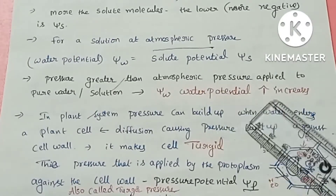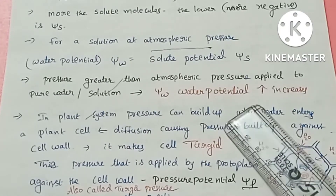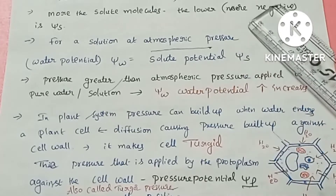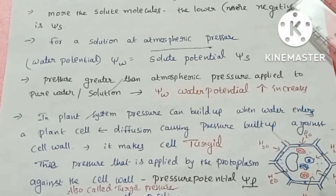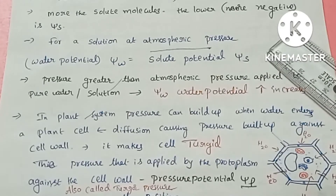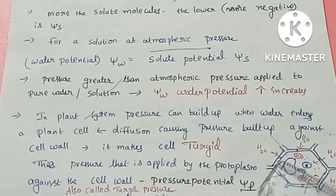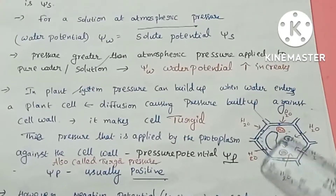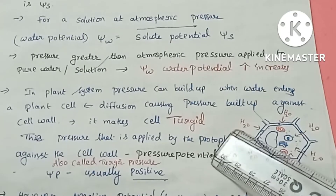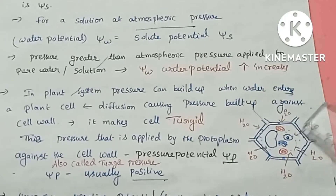If we increase pressure beyond atmospheric pressure, water potential increases. Consider a plant cell: when water enters the cell, water molecules will diffuse in and the cell wall will create pressure — this is called pressure potential.